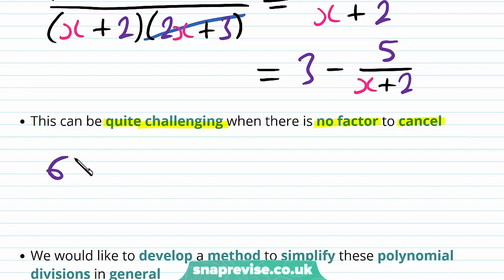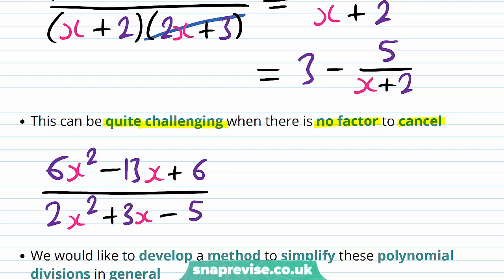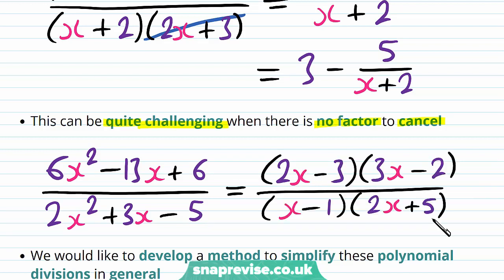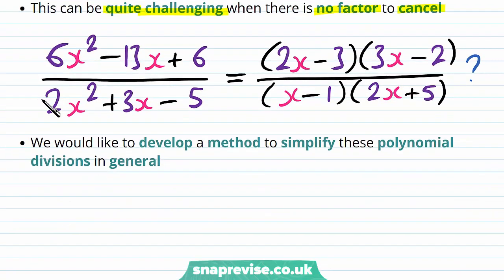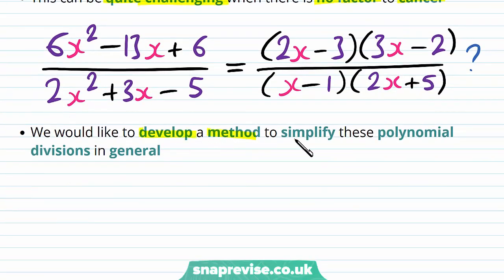Let's say we have the expression (6x² − 13x + 6) over (2x² + 3x − 5). Then we can factorize the numerator into (2x − 3)(3x − 2), and we can factorize the denominator into (x − 1)(2x + 5). But here there is no factor to cancel from the numerator and denominator. So how can we proceed? We would like to develop a method to simplify these polynomial divisions in general.